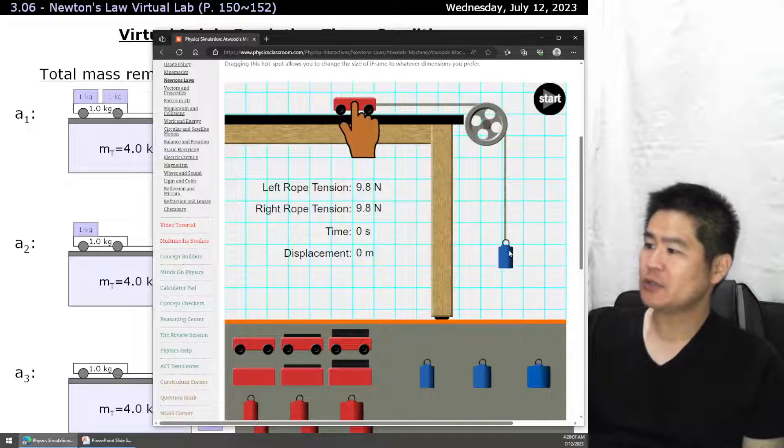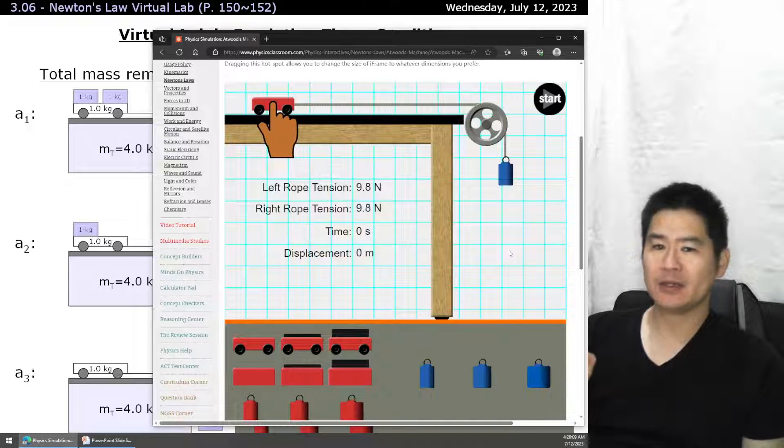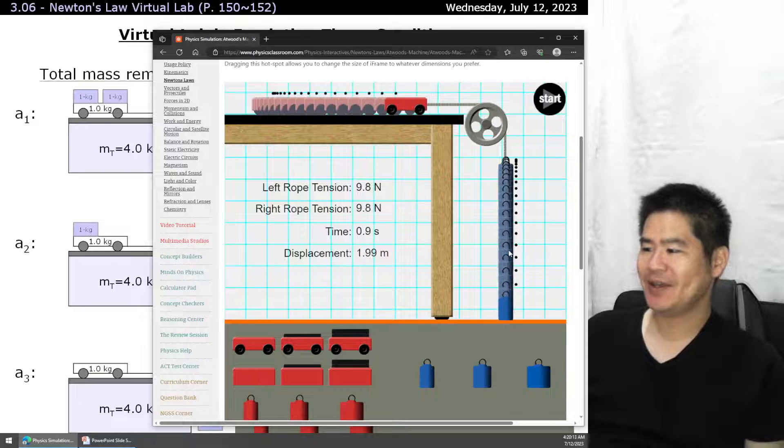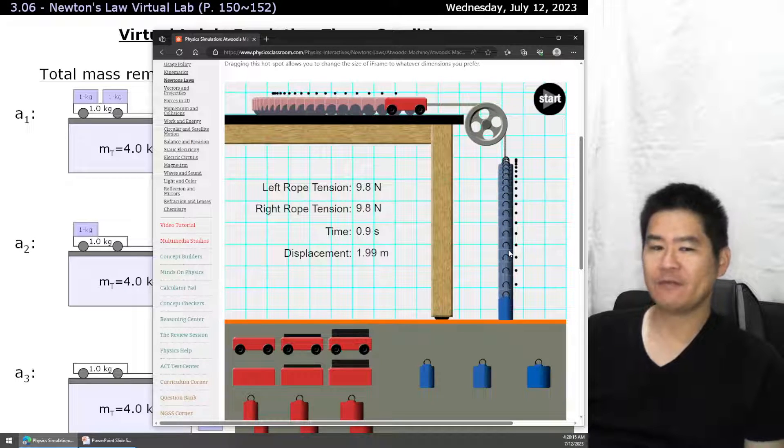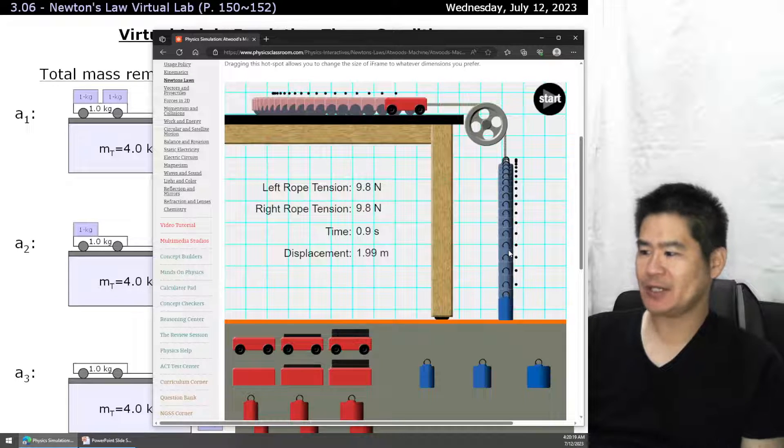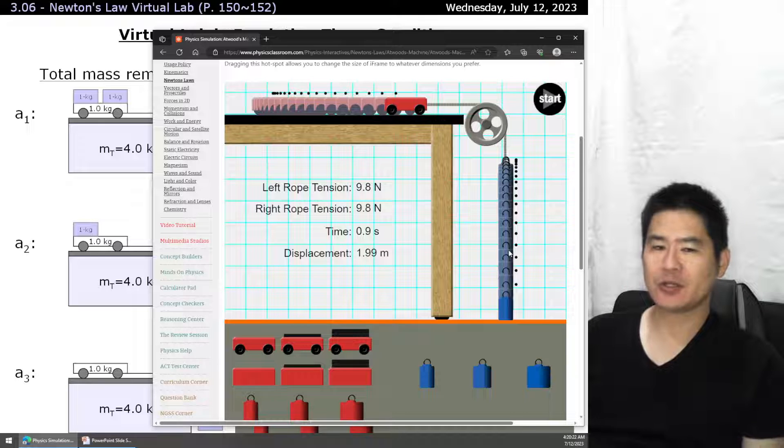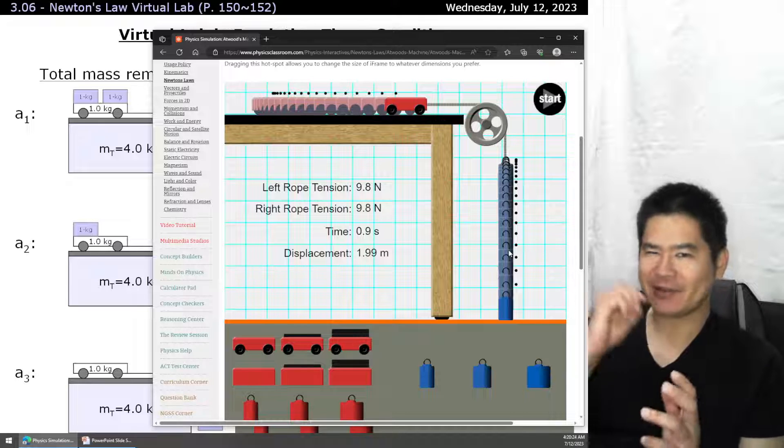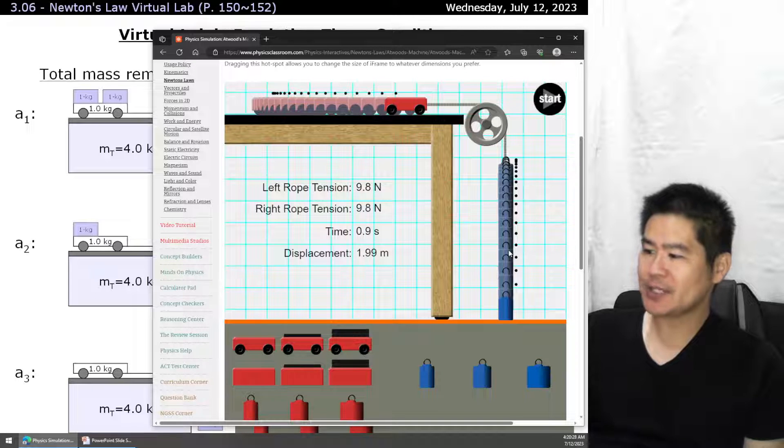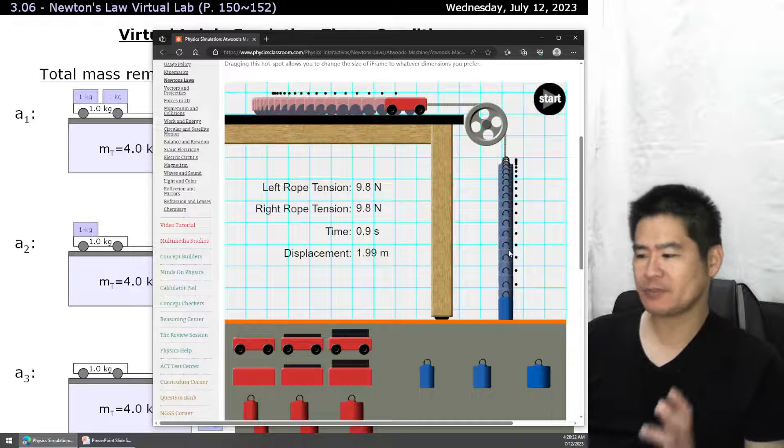Let's start this again. You'll drag the cart to the beginning. You'll turn on the ticker timer, then you'll press start. And you'll see that it's gathered all the data for you. So you can see that the ticker tape has a length of 1.99 meters, and the time that it took was 0.9 seconds. So it's already counted out all the dots for you and figured out the time. As for the tension, don't worry too much about it. You can use it as a reference, a mental reference, but that's it.